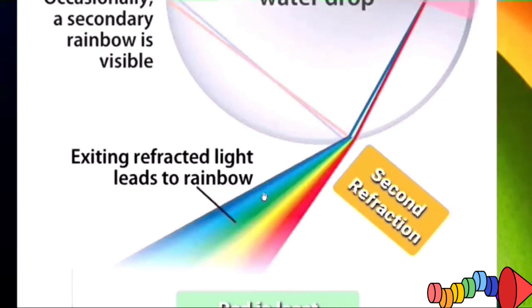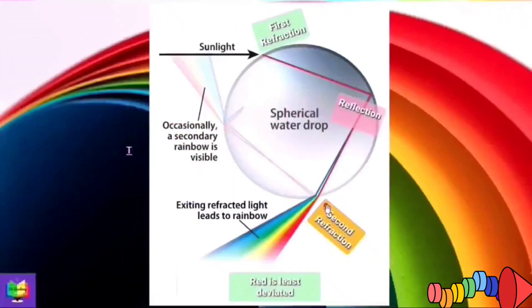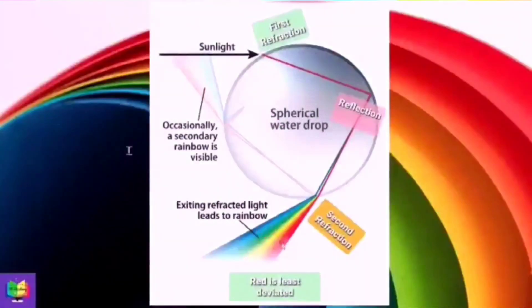See these are seven colors. In common language we say it is VIBGYOR: violet, indigo, blue, green, yellow, orange and red. So red is deviated the least and the violet color is deviated the most.